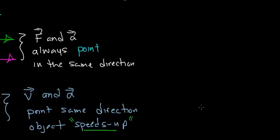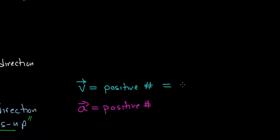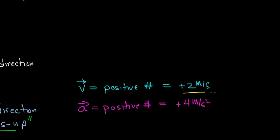Note that in this case the velocity vector is pointing in the positive direction. So whenever the velocity is a positive number and the acceleration is also a positive number, the object's velocity is going to increase — the object is going to speed up. As an example, let's suppose we had an object with an initial velocity of plus 2 meters per second and an acceleration of plus 4 meters per second squared. Positive velocity and positive acceleration means the object speeds up.